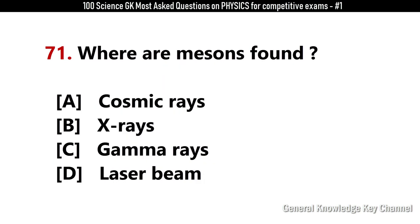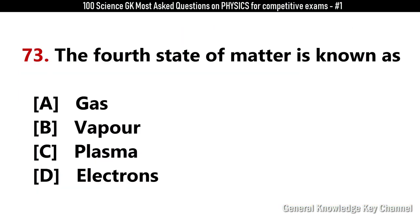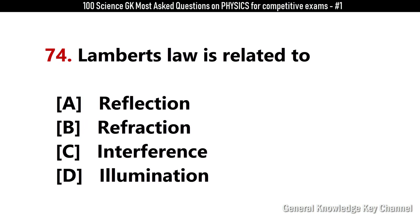Where are mesons found? Answer A: Cosmic rays. Plants dry up in winter due to frost because? Answer D: There is mechanical loss of tissues and drought conditions prevail. The fourth state of matter is known as? Answer C: Plasma. Lambert's law is related to? Answer D: Illumination.